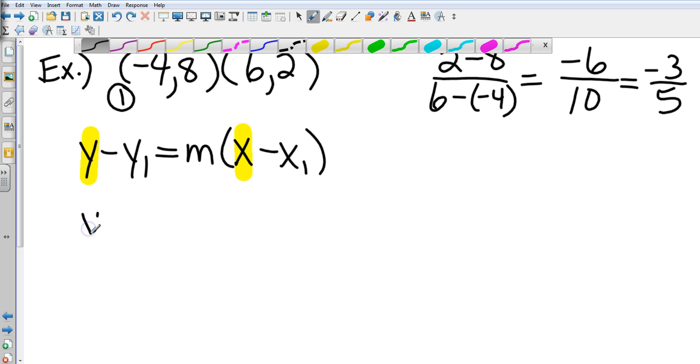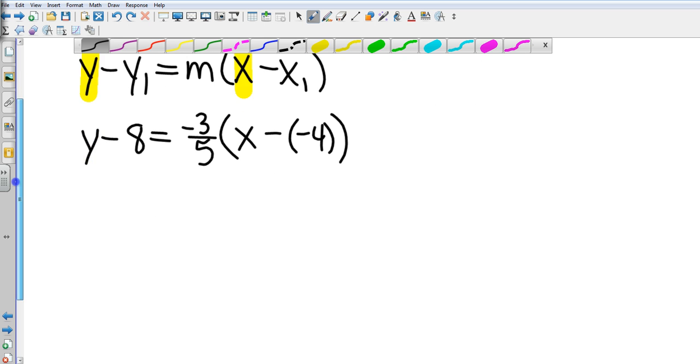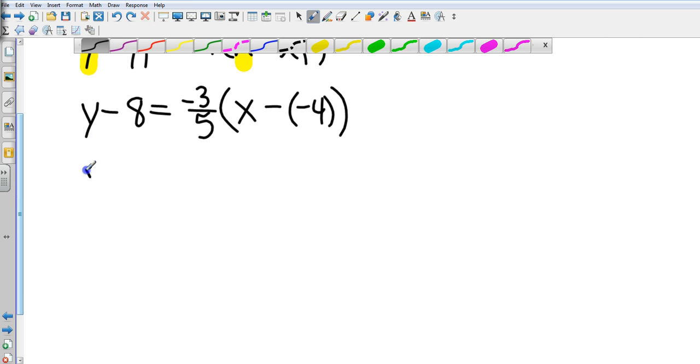So I'm going to have y minus my y1, which in this case is 8, equals my slope, which I just found over there to be negative three-fifths, times x—which stays x—minus my x1, so that's minus negative four.